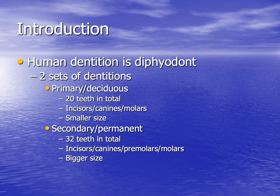To start with, we should know that human dentition is a diphyodont dentition. 'Di' means two, and diphyodont means that humans have two sets of dentitions: a primary or deciduous one, and a secondary or permanent one that replaces the deciduous or primary set.